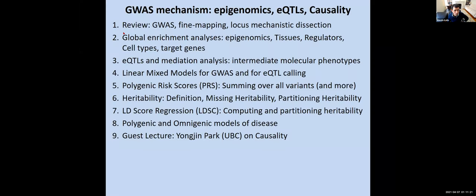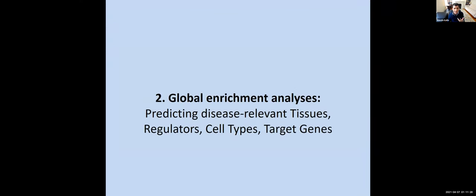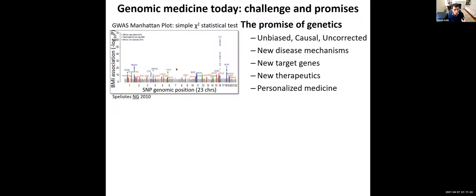Today we're going to dive into global methodologies that enable us to make these inferences across thousands of genetic loci simultaneously. We'll look at methods for global enrichment analysis to predict disease-relevant tissues, regulators, cell types, and target genes — essentially understanding the functional drivers and mechanistic basis behind every peak in a Manhattan plot.